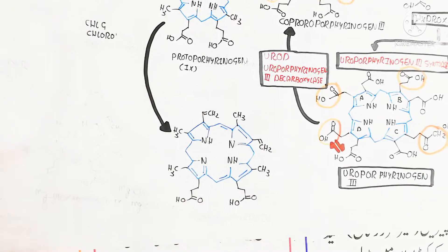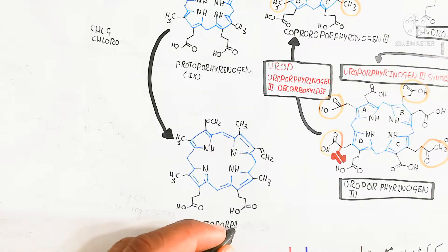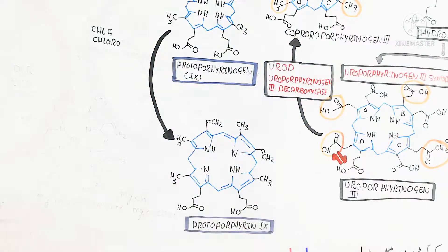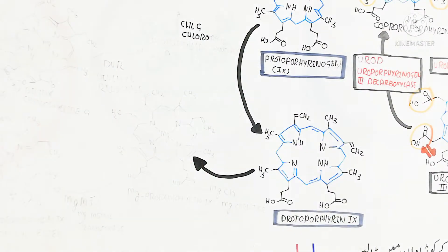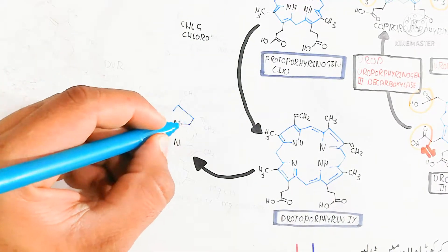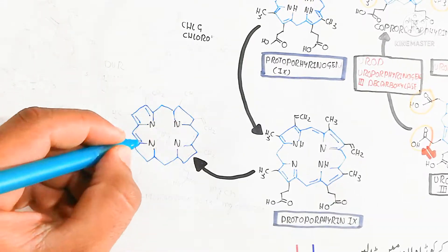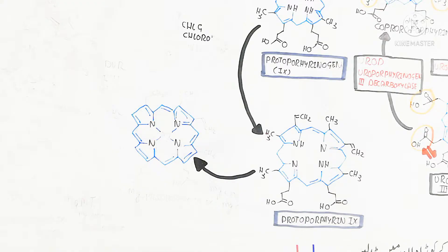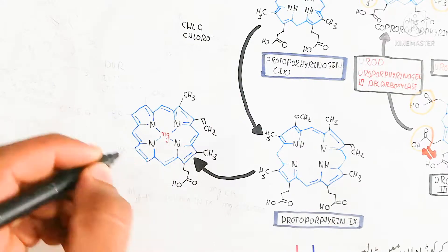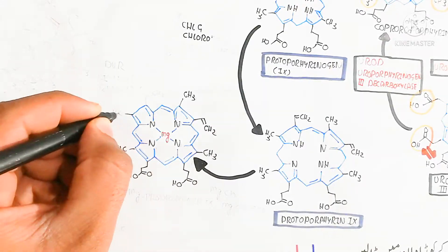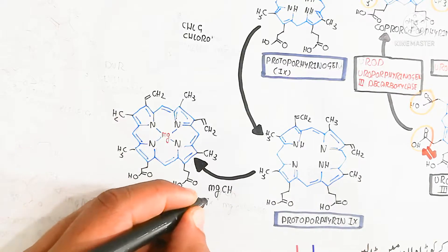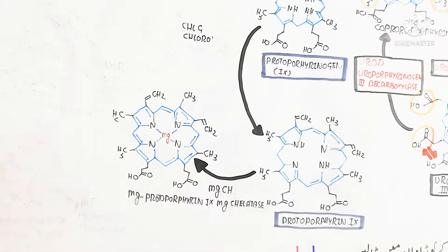The next step produces magnesium protoporphyrin 9. The magnesium chelatase enzyme is used for chelate formation. Magnesium will bind with the four nitrogen sides of the porphyrin ring, forming a complex — this is known as chelate formation, because the compound contains four nitrogen atoms forming a ring structure.